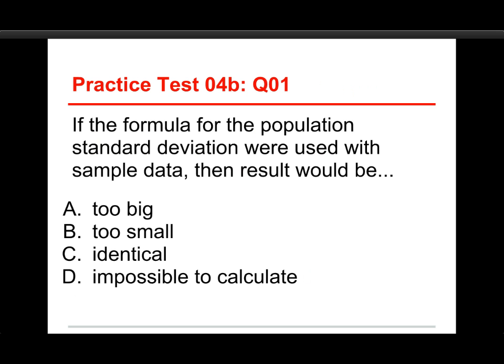The first question is: if the formula for the population standard deviation were used with sample data, then the result would be A, too big; B, too small; C, identical; or D, impossible to calculate. The answer to this one is it would be too small.